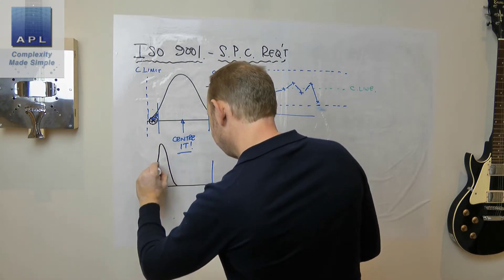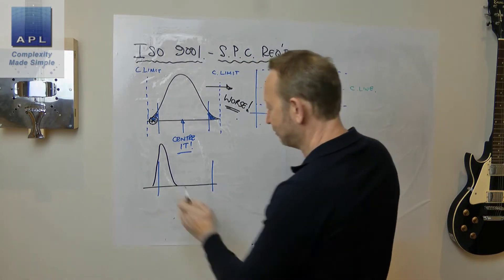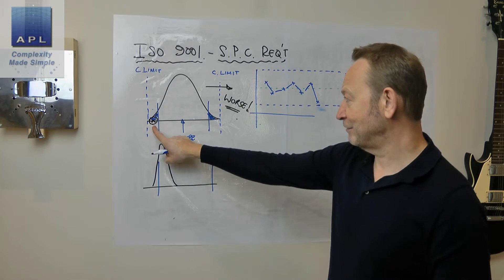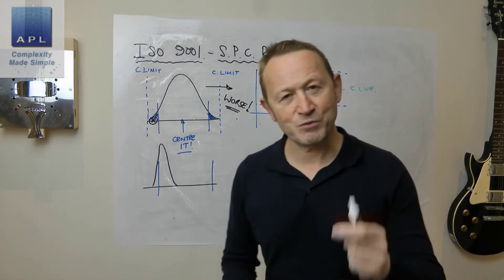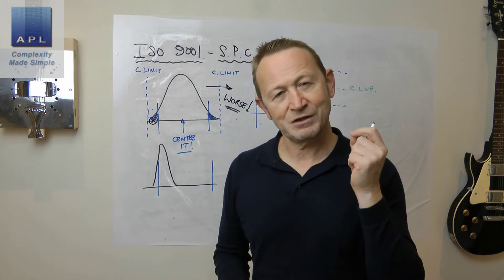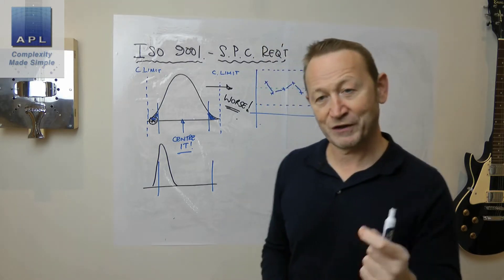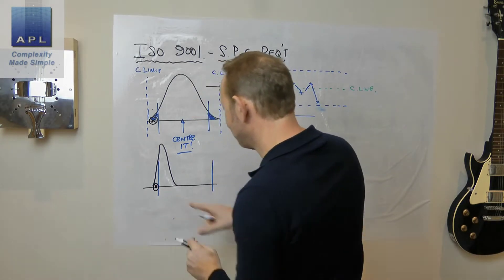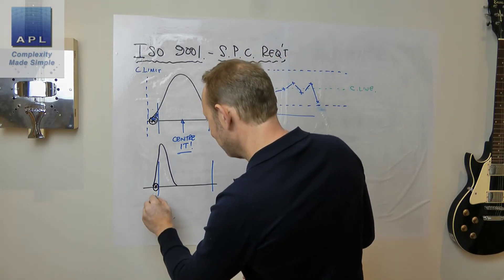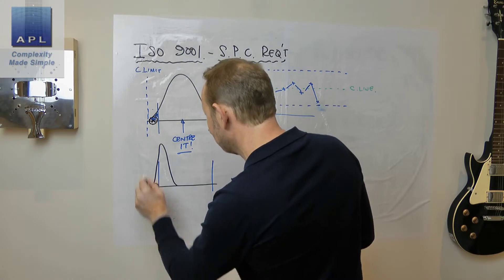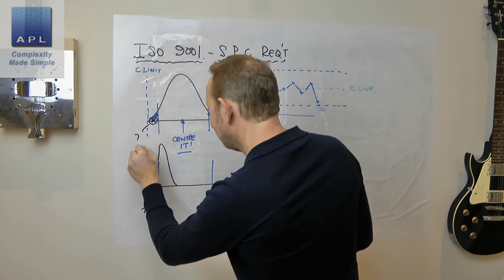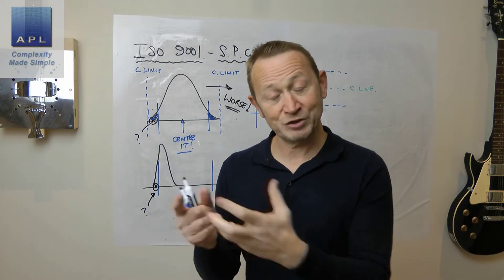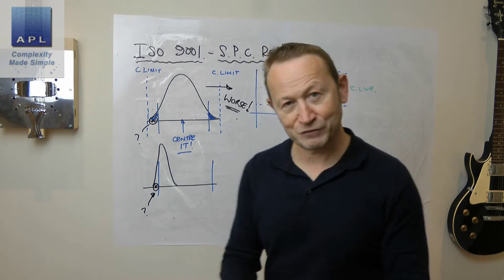Now he has this situation. So now he's got defects out of this side just the same as he had a defect out of that side. Now would it be appropriate for him to adjust that process? Well the answer to that is yes. But of course, he just sees a single data point. So this single data point looks identical to this single data point.